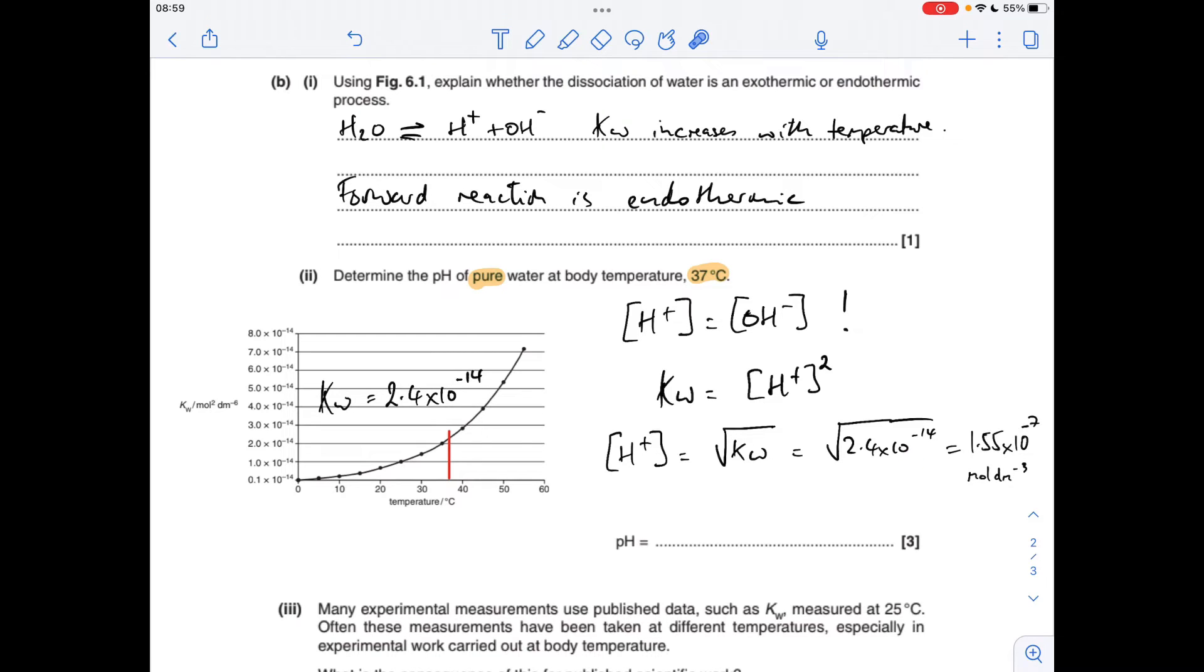2.4 times 10 to the minus 14, which gives an H plus concentration of 1.55 times 10 to the minus 7 moles per decimetre cubed. So all I need to do now is minus log that to get the pH. And to two decimal places, it's 6.81.